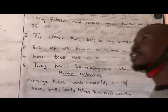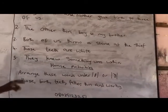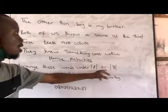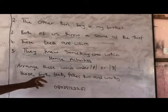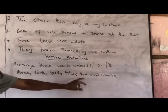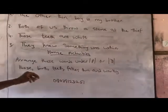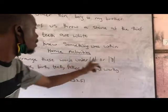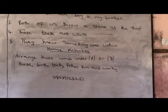Now this is what you are going to do for me as your activity. You are going to arrange these words under the correct sound — either this or this. The words are: those, birth, teeth, father, thin, and worthy. If a word belongs to the first sound, you write it there; if it belongs to the second sound, you write it there. That is how you are going to arrange it in that order.